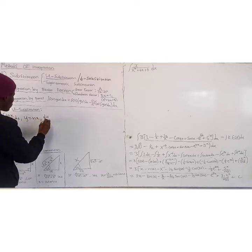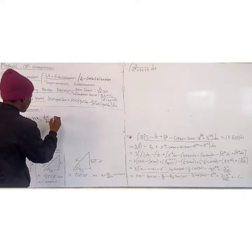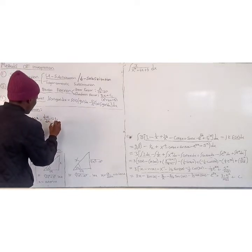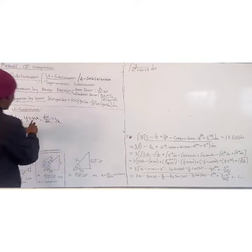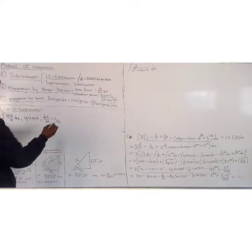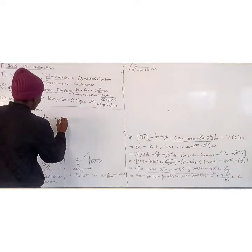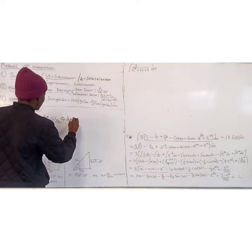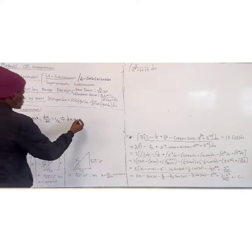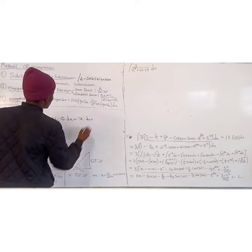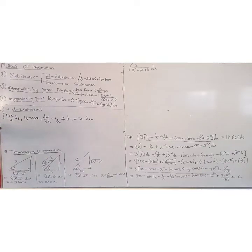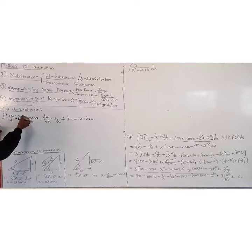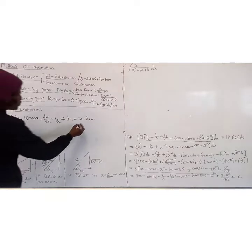We get du/dx equals 1 over x, which is the derivative of ln(x). Proceeding further, we make dx the subject, so we get dx equals x du. Where we see ln(x), we put u, and where we see dx, we put x du.